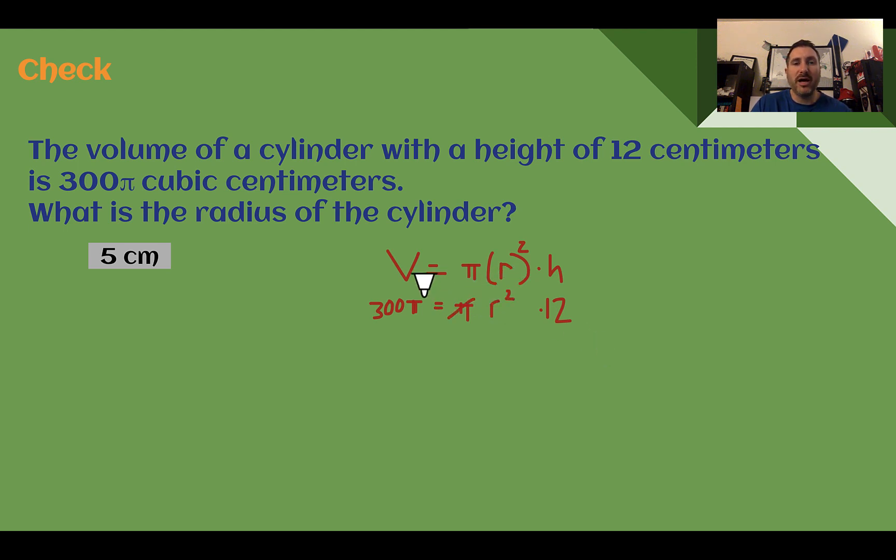Let's divide both sides by pi. That would cancel that out. Dividing 300 by 12, so divide by 12. I get 25 equals radius squared.